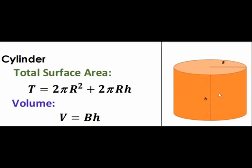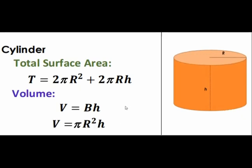So for this cylinder, the total surface area is the sum of the lateral surface area and the areas of the two circles. The lateral surface area is 2πRH, while the area of one circular base is πR squared. Therefore, the total surface area is equal to 2πR squared plus 2πRH. The volume is the area of the base times height; given the base as a circle, the volume is equal to πR squared H.